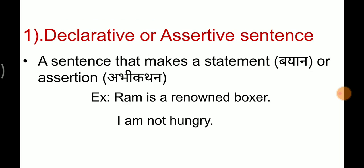Declarative and assertive sentences — what are they? A sentence that makes a statement or assertion (bayaan). This means your statement can be positive or negative. A declarative or assertive sentence can be either positive or negative. A sentence that makes a statement or assertion is called a declarative or assertive sentence.